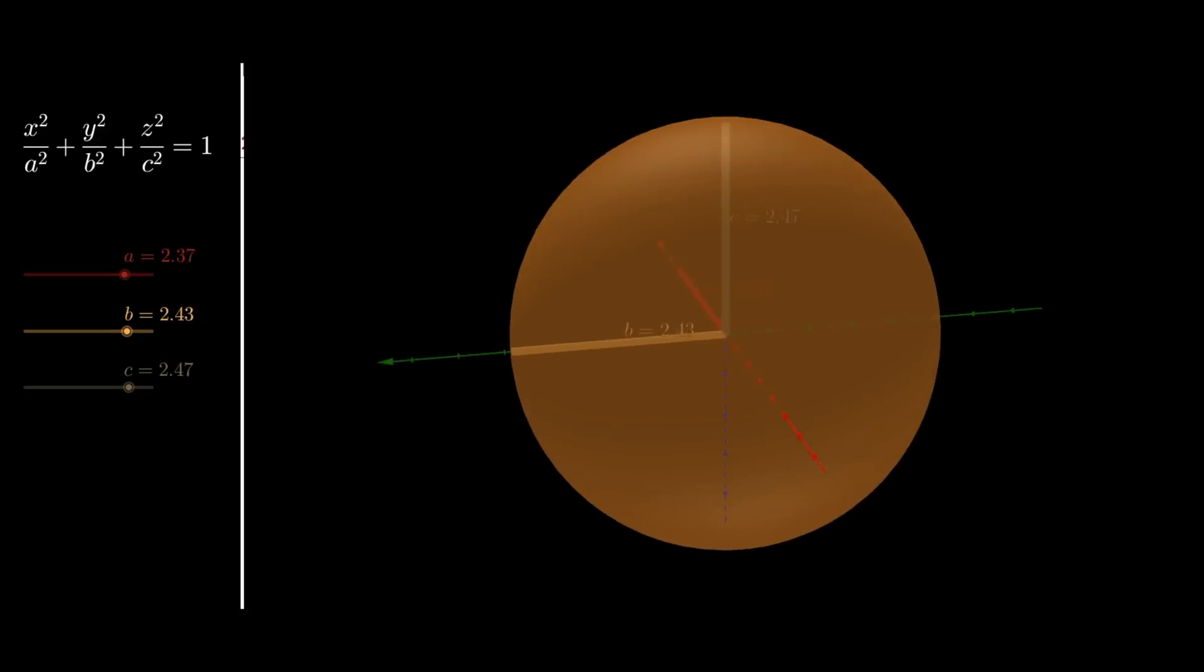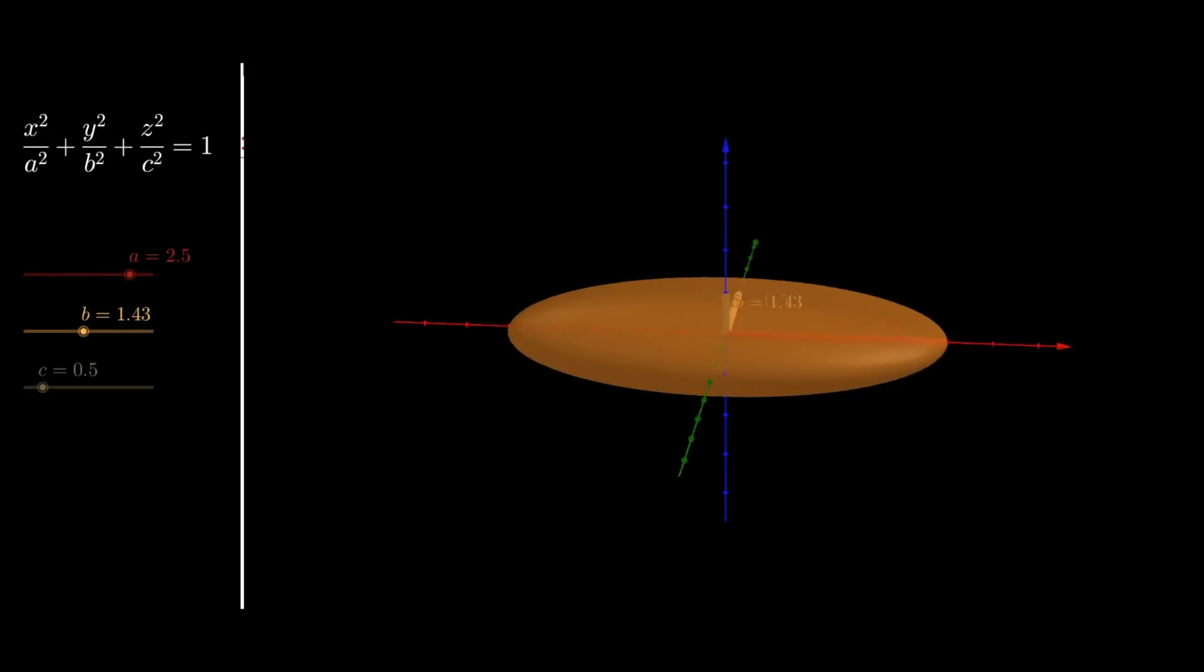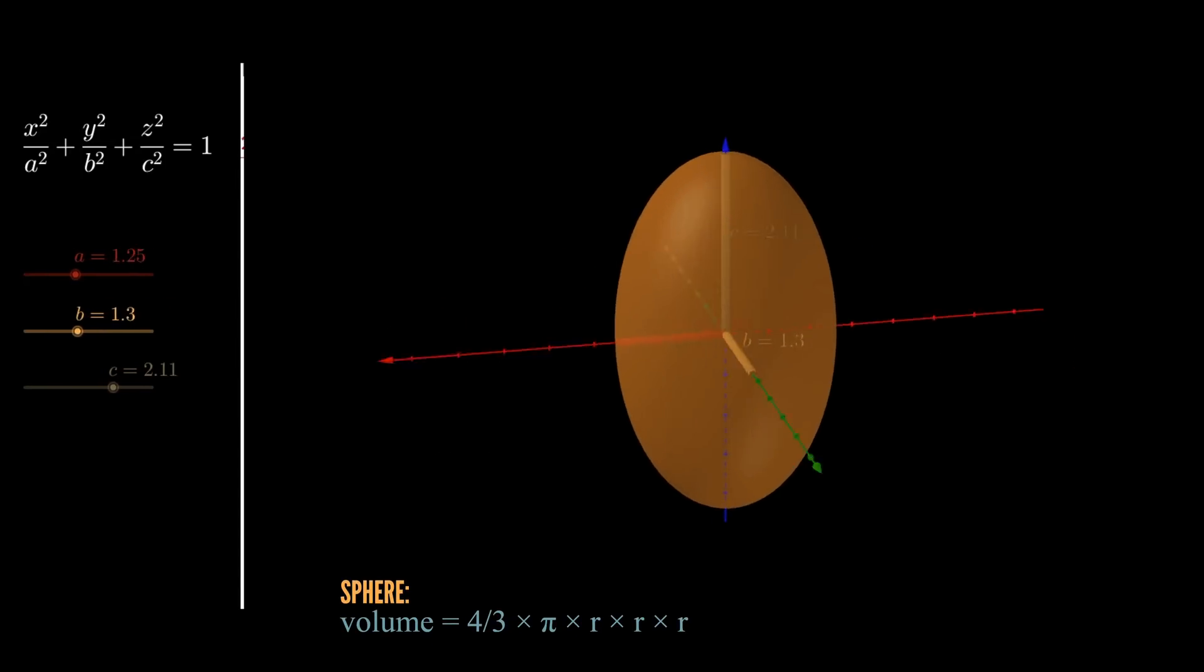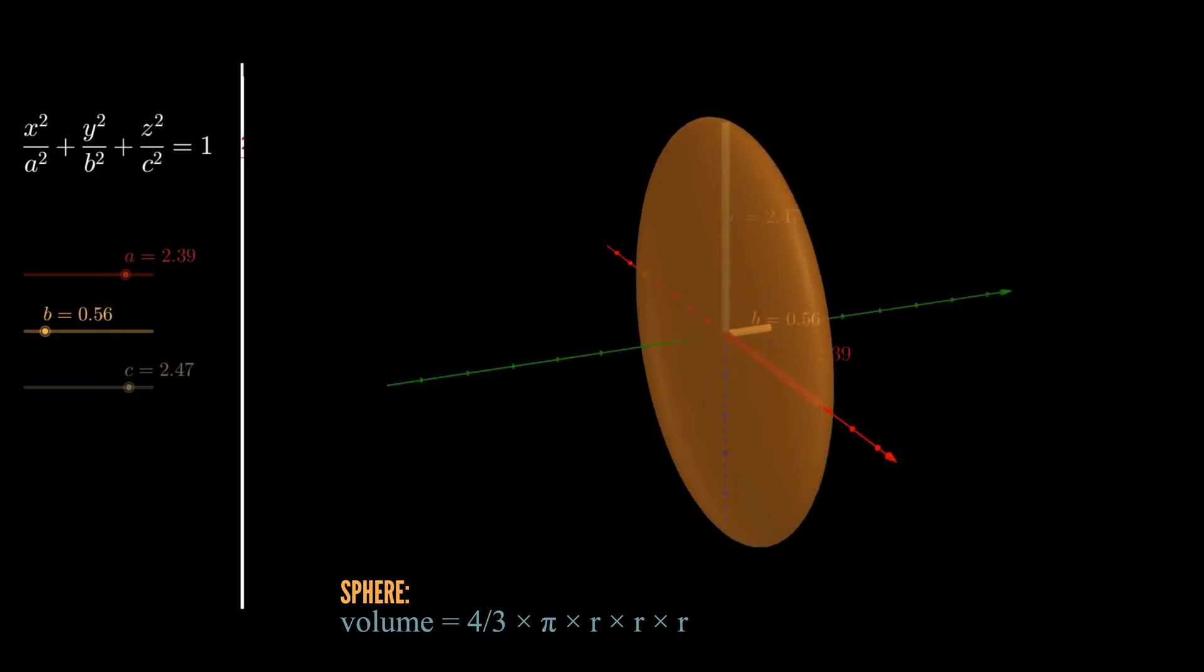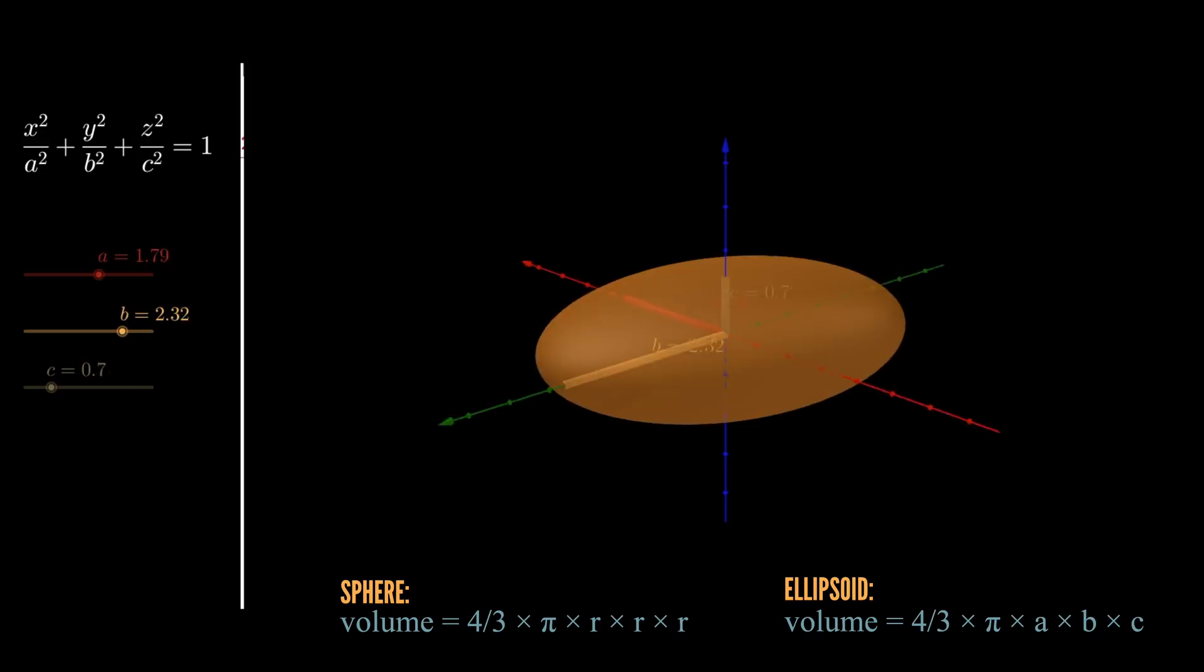But divide each by their own semi-axis and suddenly you are in ellipsoid town. Fun side fact here, the volume of a sphere is four-thirds pi r cubed. The volume of an ellipsoid is four-thirds pi a times b times c.